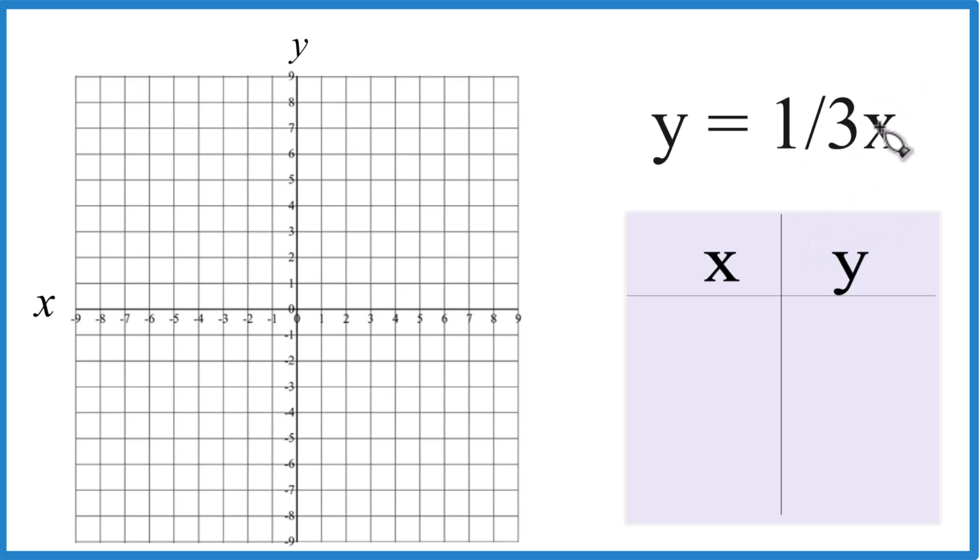So what we'll do is put a value in for x, do the multiplication, figure out y, and then we'll graph it, and that'll give us the line here for y equals one-third x.